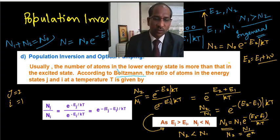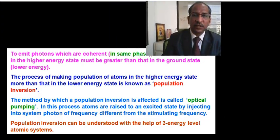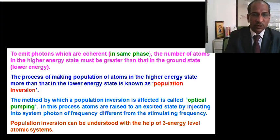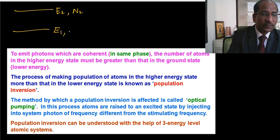So I hope you all got the idea. Now let's see the second part. In the second point, what they are saying is to emit photons which are coherent, in same phase, the number of atoms in the higher energy state must be greater than that in the ground state. Now this is the requirement for the laser. This was E2, this is E1. Here N2 is the number of atoms in the excited state, N1 are the number of atoms in the ground state.